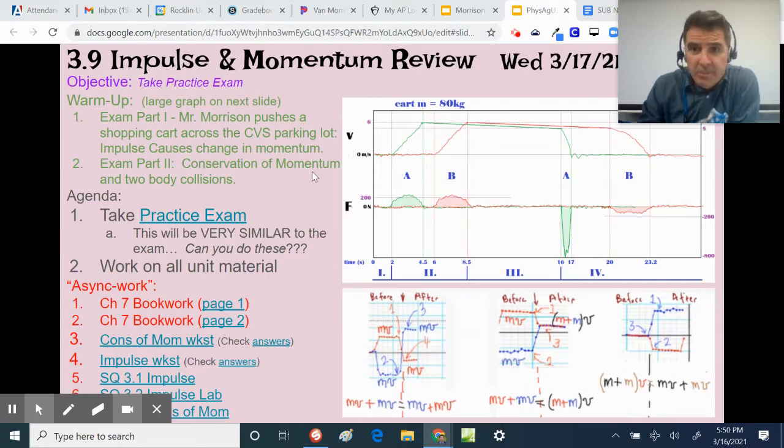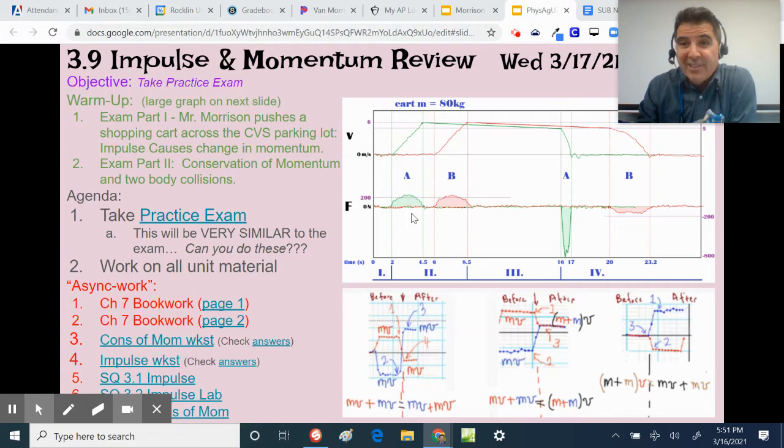Exam part one, Mr. Morrison pushes a shopping cart across the CVS parking lot. So the idea here on this first graph for part one of the exam is that I'm going to push a shopping cart toward my car and I'm gonna let go. And the cart will go across the parking lot. And oops, I accidentally hit the Tesla that's parked next to my car. So bang.